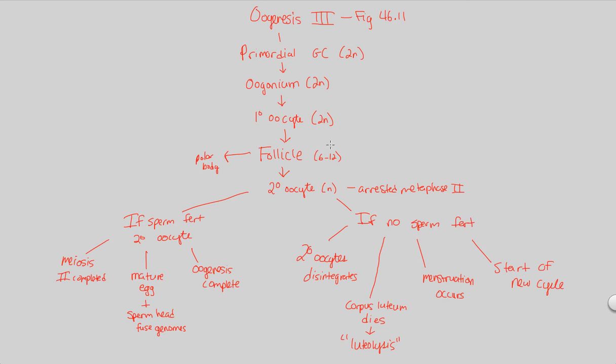This completes our look at oogenesis. I highly suggest looking at figure 46.11. Keep in mind that all of these steps seem sort of repetitive, or they seem sort of counterintuitive. But what you have to remember is that the female body in the oogenesis process is trying to make the most perfect, the most successful, and the most capable secondary oocyte of all of the possible oocytes that can be made. That's why we have 6 to 12, and we have one that wins out of all of them.